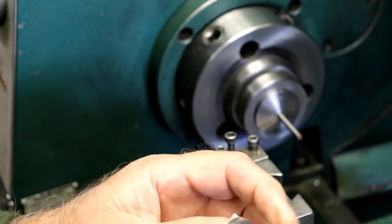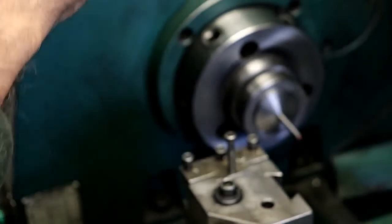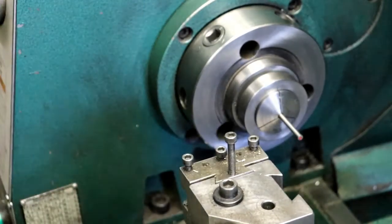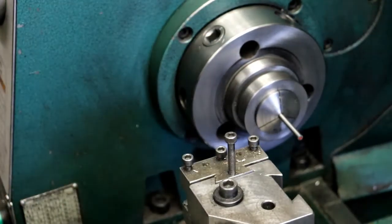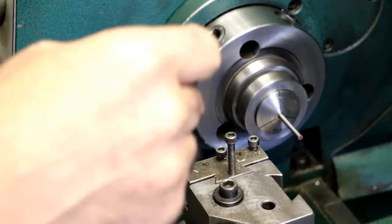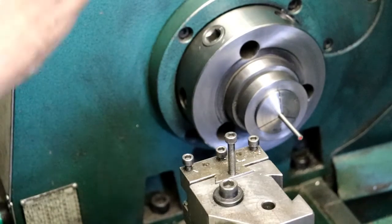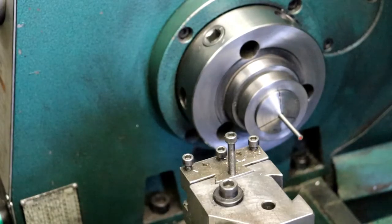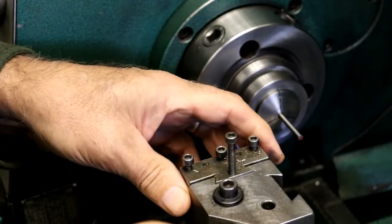I've got some material in there - it's O1 water hardening material. I need a pin that's 700 thou long, so I'll get a part-off blade here and we will part it off.